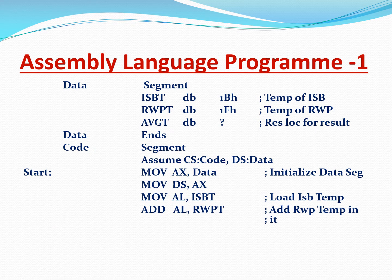As usual, we write down 'DATA SEGMENT' — that means start of the segment — so we start a segment and give it the name DATA. In that we first say 'ISBT' — that is temperature of Islamabad — 'DB' (define byte) '1Bh', that is the decimal number converted to hexadecimal. So we have reserved a byte in our data segment, given it the name ISBT, and in this location we have stored the Islamabad temperature, which is 1Bh.